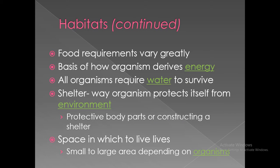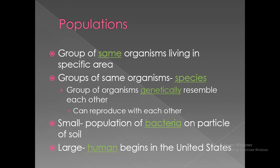Next is Population. It is a group of the same organisms living in a specific area — a group of the same species that are genetically similar and can reproduce with each other. Examples include a small population of bacteria on a particle of soil, or large numbers of human beings in the United States or the world.